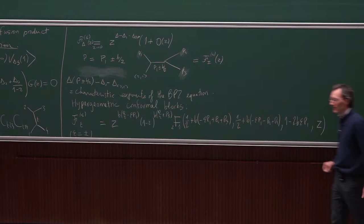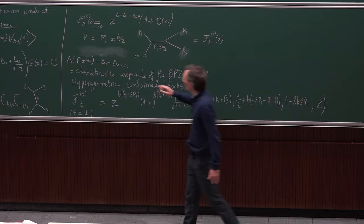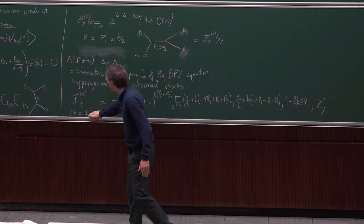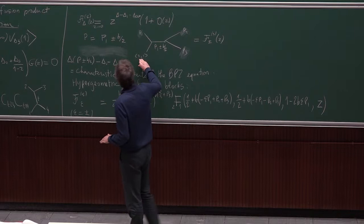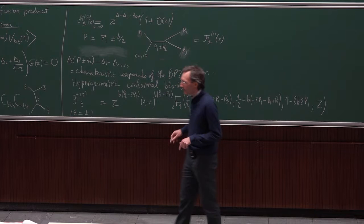The ± sign comes from the existence of two solutions — ε = ± labels the two solutions. I always have the field V₂₁; I'm not considering V₁₂ for the moment. There are two solutions because it's a second-order differential equation, which arises because the null vector was at level 2.